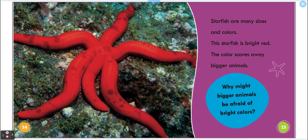Starfish are many sizes and colors. This starfish is bright red. The color scares away bigger animals. Let's count: one, two, three, four, five, six legs. Why might bigger animals be afraid of bright colors? What do you think?